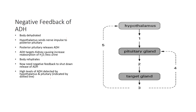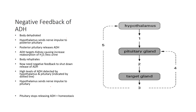High levels of ADH are detected by the hypothalamus and the pituitary. You can see that's the dotted line — high ADH. The hypothalamus detects that, then sends another nerve impulse to the posterior pituitary, and the pituitary stops releasing ADH. We get it back under homeostasis once the job is completed.